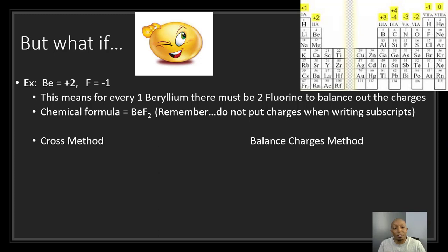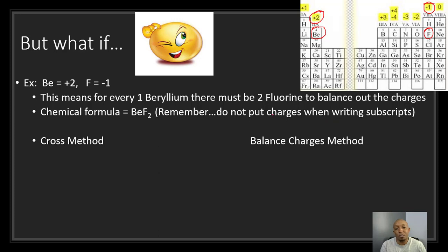Beryllium has a plus 2 charge and fluorine has a negative 1 charge. Since the charges don't cancel, for every one beryllium there must be two fluorines to balance the charges. The chemical formula is BeF2, or beryllium fluoride. Remember: do not put the charges when writing your subscripts. There are two methods: the cross method and the balanced charges method.